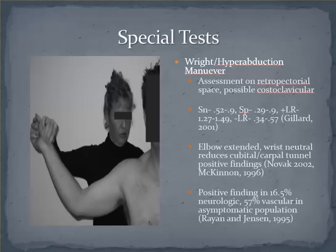Roos, or the hyperabduction maneuver, assesses for entrapment potentially at the retropectoral space and even the costoclavicular space. Most descriptions include two parts: the first involves abducting the shoulder to just shy of 90 degrees and externally rotating the shoulder to 90 degrees, assessing for reproduction of symptoms through pulse change or onset of neurologic symptoms. The test position is held for about a minute, and performing the test in the hyperabductive position is thought to bias the costoclavicular region. By keeping the wrist in neutral and the elbow flexed to less than 45 degrees, you reduce possible contributions from the carpal or cubital tunnel. There are a range of clinometrics reported for this test.